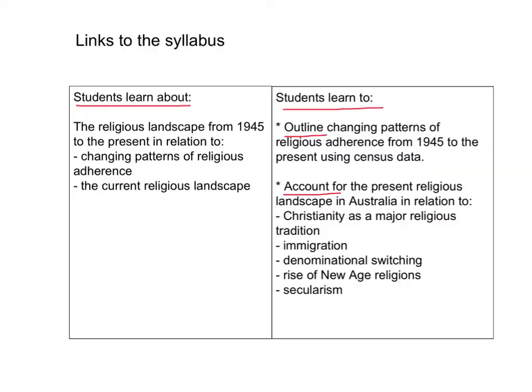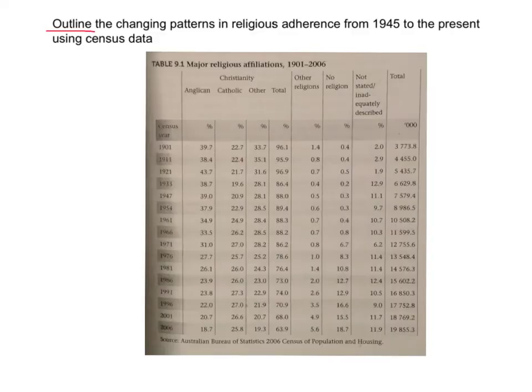Let's get started. So let's begin with the first outcome, which requires you to identify the changing patterns in religious adherence from 1945 to the present using census data. Before we can go on to content, we need to understand what this syllabus outcome means — what you're actually required to do. You would approach this the same way you would approach breaking down a question, and step one would be to identify the glossary term, which has already been identified for you as 'outline'.